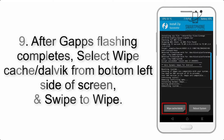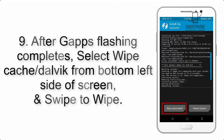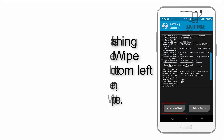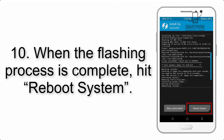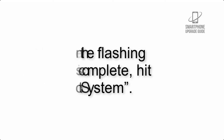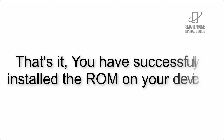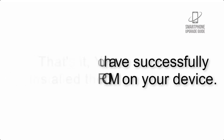Step 9: After gapps flashing completes, select Wipe Cache and Dalvik from the bottom left side of the screen and swipe to wipe. Step 10: When the flashing process is complete, hit Reboot System. That's it — you have successfully installed the ROM on your device.